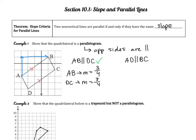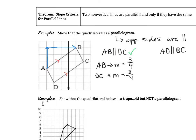Another way you can do this is by using the slope formula. For example, if you look at the coordinates of A, that coordinate is at negative 3, negative 2. And if you look at the coordinate of D, that's at negative 2, negative 4.